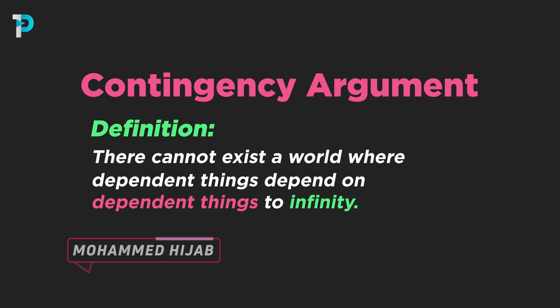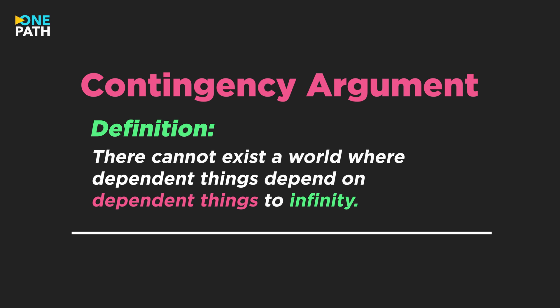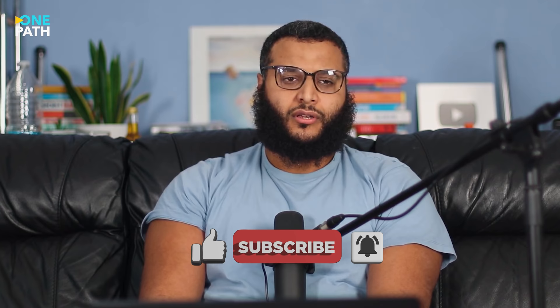Can you give us a summation of what the contingency argument actually is? The argument can be made in one sentence, which is a postulation: there cannot be a world with dependent things depending upon dependent things ad infinitum. That's the argument. If someone agrees with this postulation, then they are invoking a need — the entailment of such agreement is the need for a necessary existence or an independent thing. And if they disagree with it, then we have an argument from composition which we make.